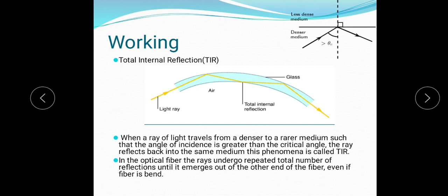To summarize, there are two reasons why the signal gets reflected inside the medium. The first reason is when the signal travels from a denser medium to a less dense medium. The second reason is if the angle of incidence is greater than the critical angle, the signal will reflect. So this is the basic principle of Total Internal Reflection happening in the optical fiber cable.